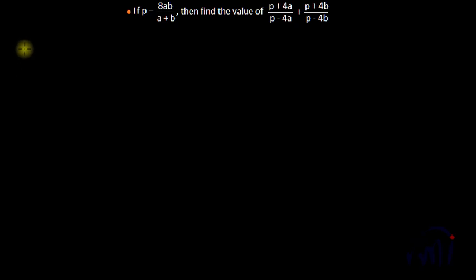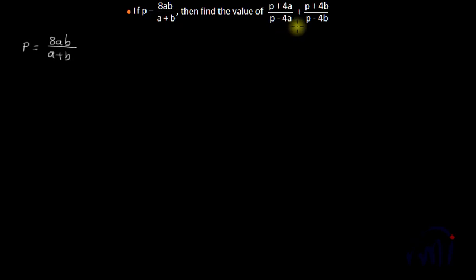What you are given is the value of p: p = 8ab/(a+b). We have p+4a divided by p-4a. If I divide both sides by 4a, I'll get p/4a = 2b/(a+b).